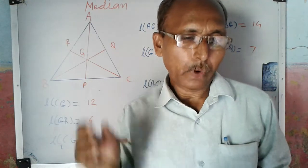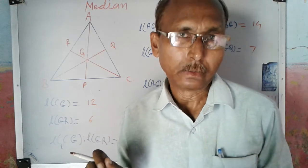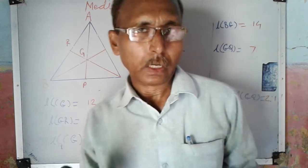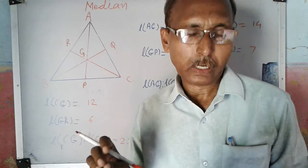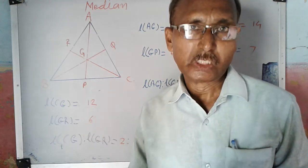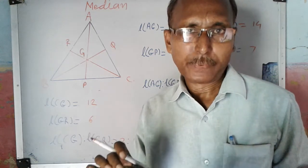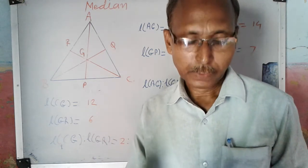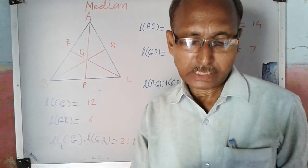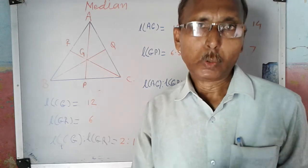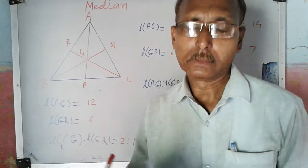From this, we have these properties of the median. The medians of a triangle are concurrent. Their point of concurrence is called the centroid, and it is denoted by G. For all types of triangles, the location of centroid is in the interior of the triangle. The centroid divides each median in the ratio 2 is to 1. These are the properties of the median.